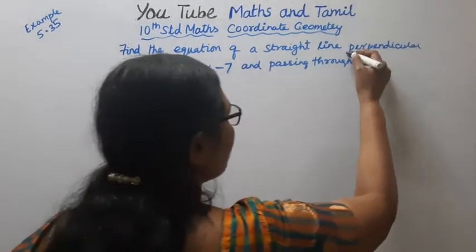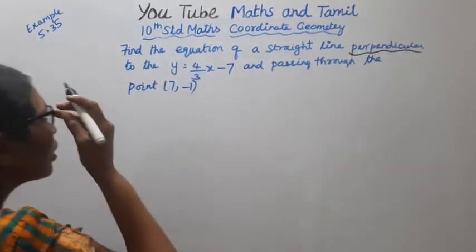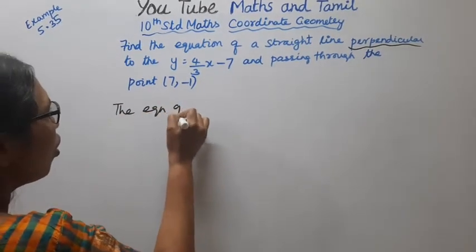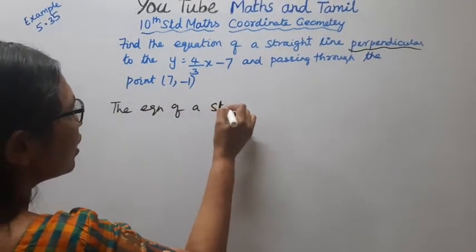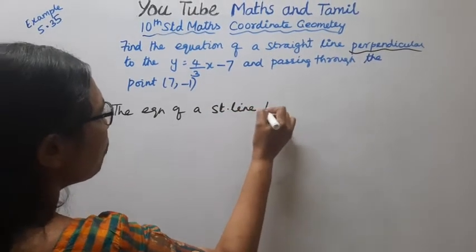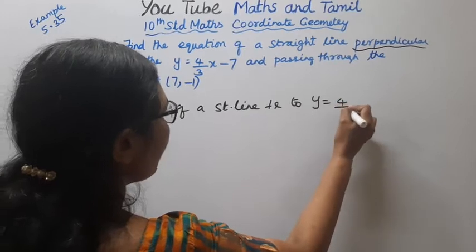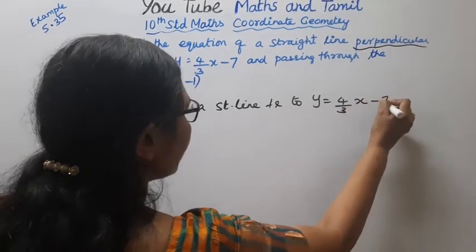The word perpendicular. The equation of a straight line perpendicular to y equal to 4 by 3x minus 7. It is clear?